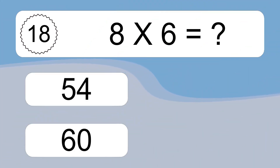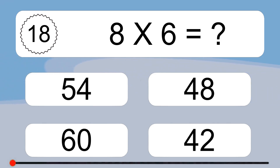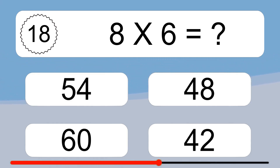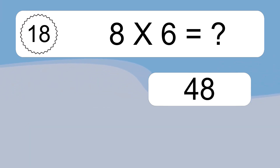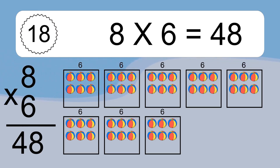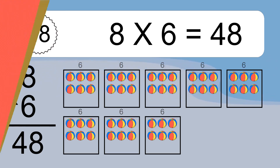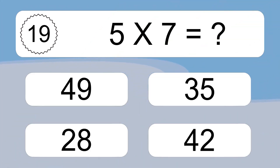8 times 6 equals what? 8 times 6 equals 48. We have 8 boxes, and each box has 6 colorful balls inside. If you count all the balls in all the boxes together, you will have 8 times 6 balls. This equals 48 balls.